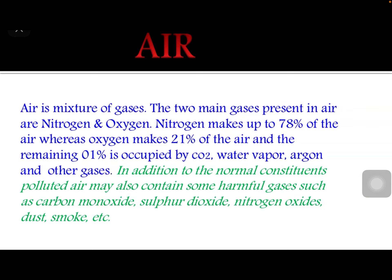Air is a mixture of gases. The two main gases present in air are nitrogen and oxygen. Nitrogen is the most abundant at 78%, oxygen is 21%, and the remaining 1% consists of other gases.